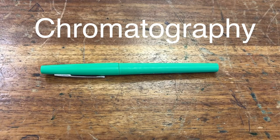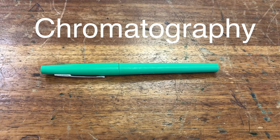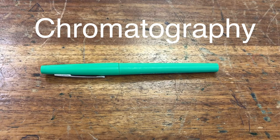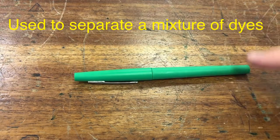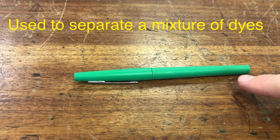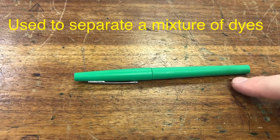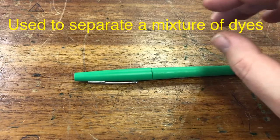What I'm going to show you here is a technique called chromatography, and chromatography is a technique that can be used to separate the dyes in an ink. So I've got a pen with some ink in it, and what I'm going to do to demonstrate to you how chromatography works is I'm going to separate the mixture of dyes in the ink in this pen.